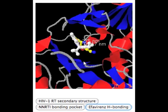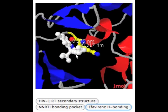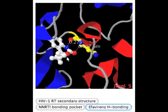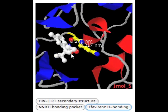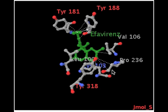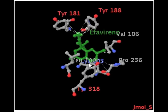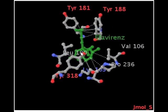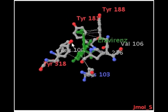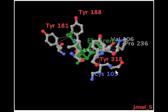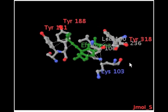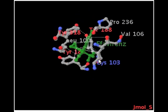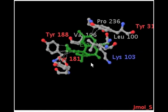As you can see here, the H-bonding interactions are between efavirenz and lysine-101 of the reverse transcriptase. Once incorporated into the NNRTI binding pocket, efavirenz interacts hydrophobically via tyrosine-181, tyrosine-188, valine-106, proline-236, lysine-103, leucine-100, and tyrosine-318. Many of these interactions are with the three-membered ring and aromatic ring of efavirenz.